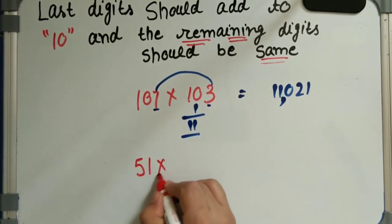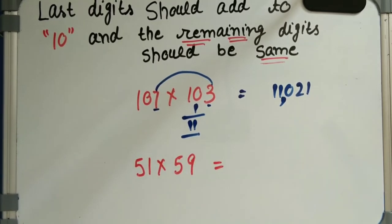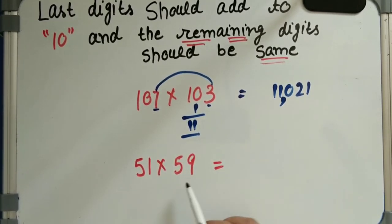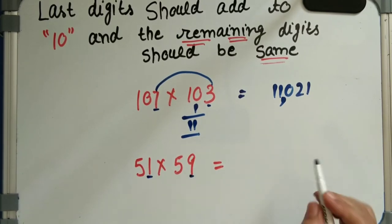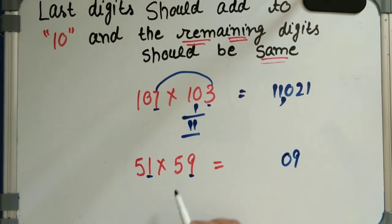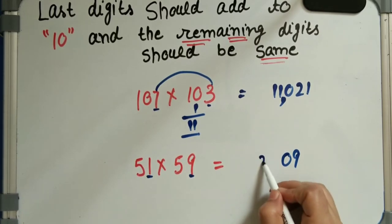Next example: 51 into 59. Here, 9 ones are 9 — but we do not write a single 9; we write 09. Next, we add 1 to 5 to get 6. Then 6 into 5 equals 30. So the answer is 3009.